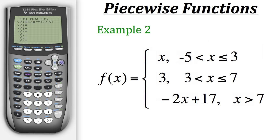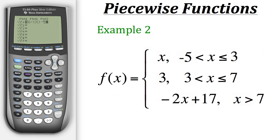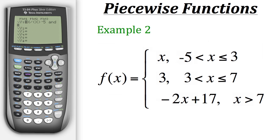So we need to do something a little bit different. The way we put this into our calculator is we actually have to put in two separate statements at the same time. First, we put in x is greater than negative 5 — so we'll do x, then go to TEST, put in the greater than symbol, and type in negative 5. But we also want x to be less than or equal to 3, so we need to specify that we want both conditions to happen at the same time. We go back to TEST, and then there's a second tab called LOGIC. Since we want both conditions to work, we hit AND, and now put in the second part: x is less than or equal to 3.